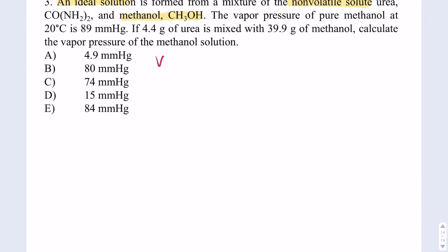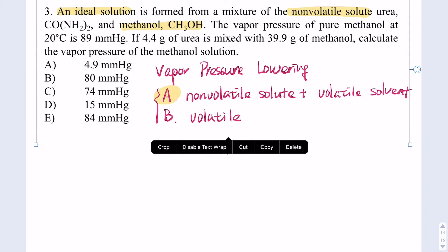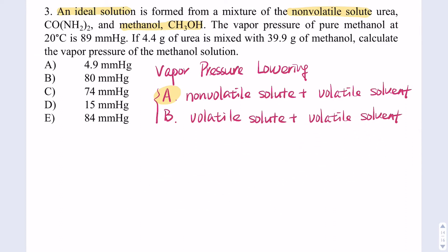For vapor pressure lowering, I have two situations. Situation A: you have a non-volatile solute plus a volatile solvent — which is our situation. Situation B: you have a volatile solute plus a volatile solvent. Those are the two situations.